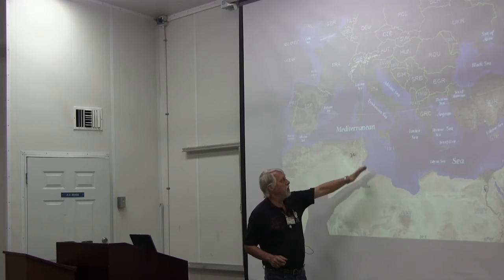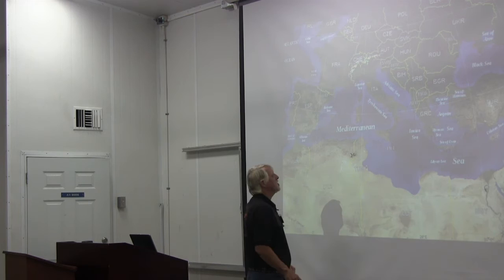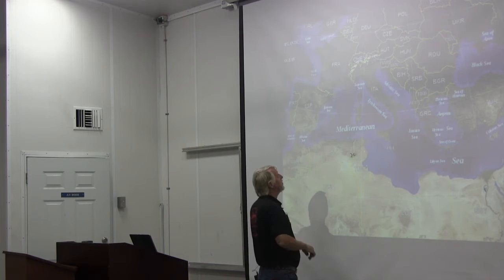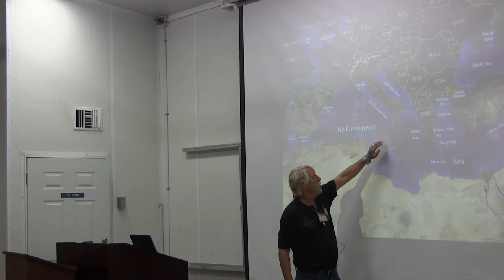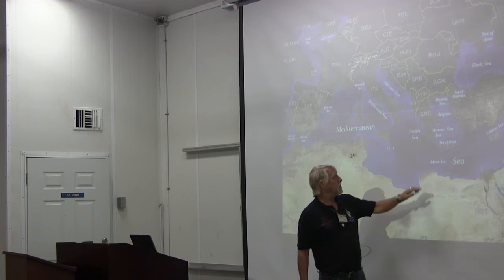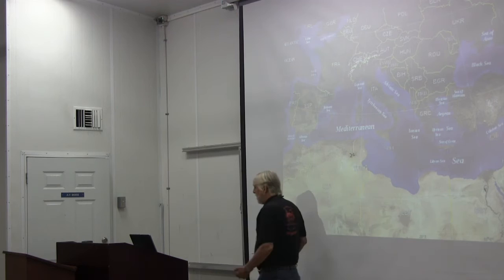Here we see the Mediterranean Sea, and you should also be familiar with the main islands there. Here are the Balearic Islands of Spain, Corsica, Sardinia, and Sicily off the boot of Italy — there's a very narrow strait in between. Some of the others include Crete and Cyprus. Look at maps and be familiar with the main islands there.